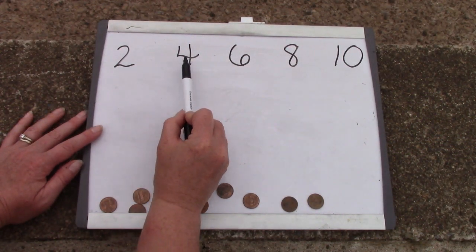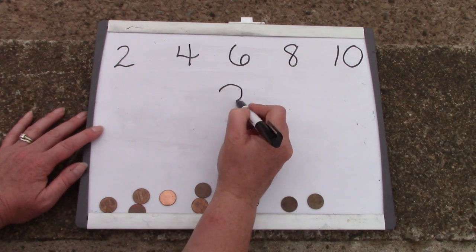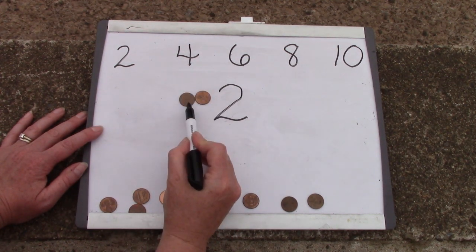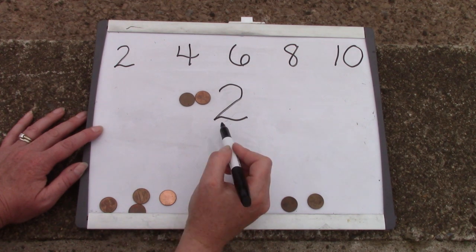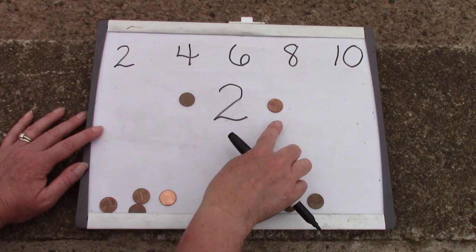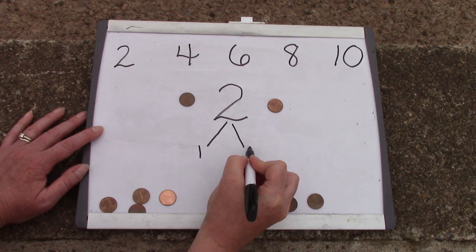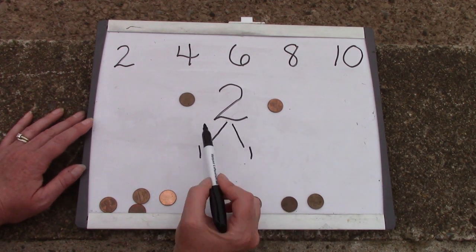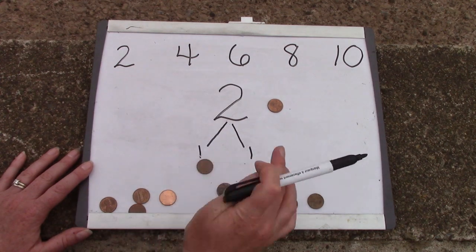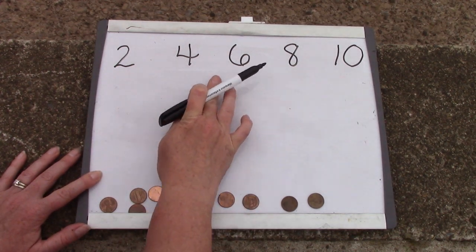Class today we are going to be dividing these double numbers in half or subtracting half of the double. This is the first number that we are going to subtract half of it. This is the number 2, so I have 2 pennies. We are going to subtract half. That would be 1. 1 plus 1 equals 2. I am going to subtract half of the number by dividing the number in half. 1 plus 1 equals 2.